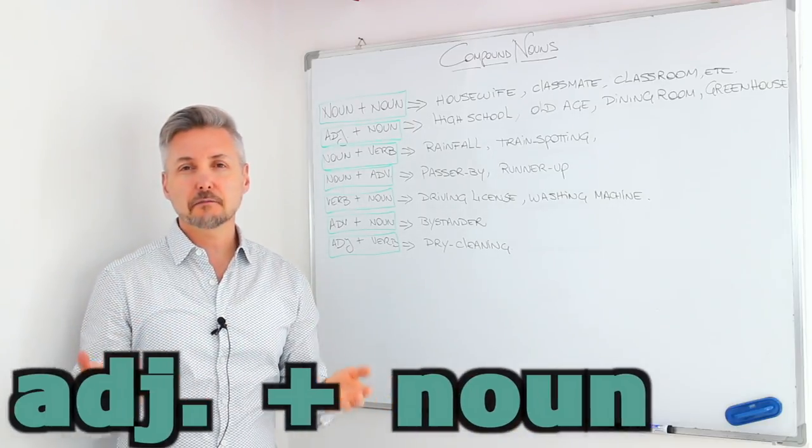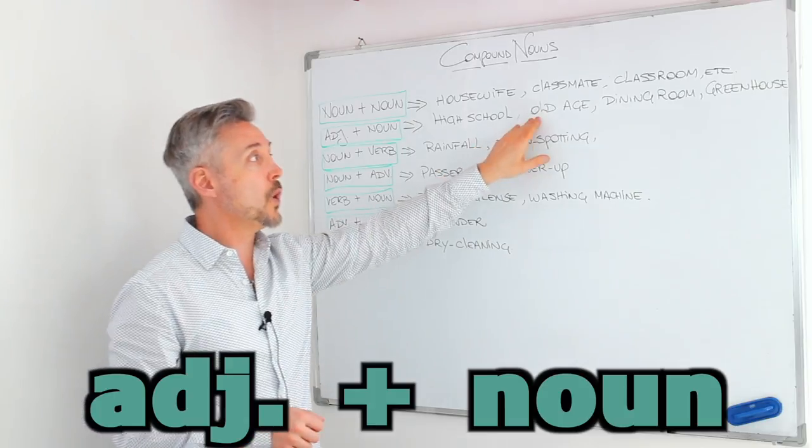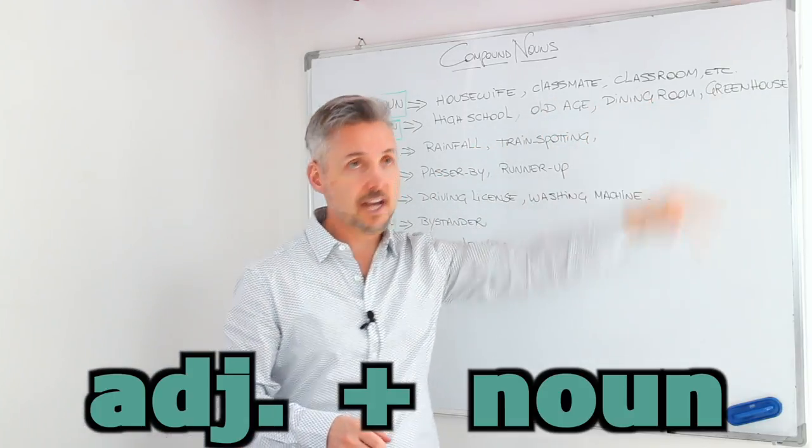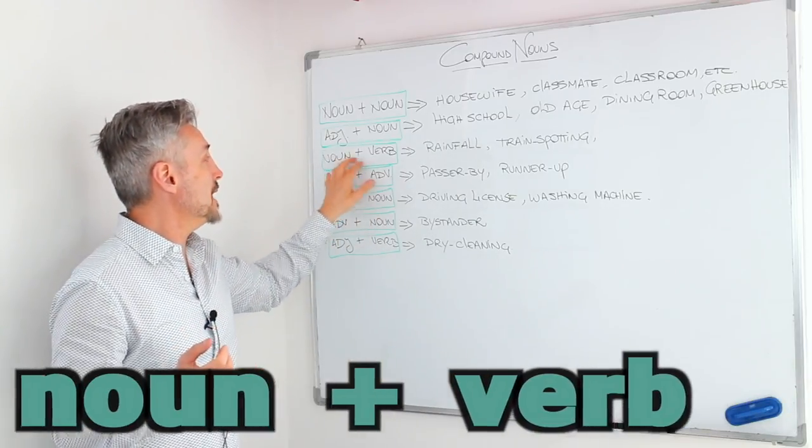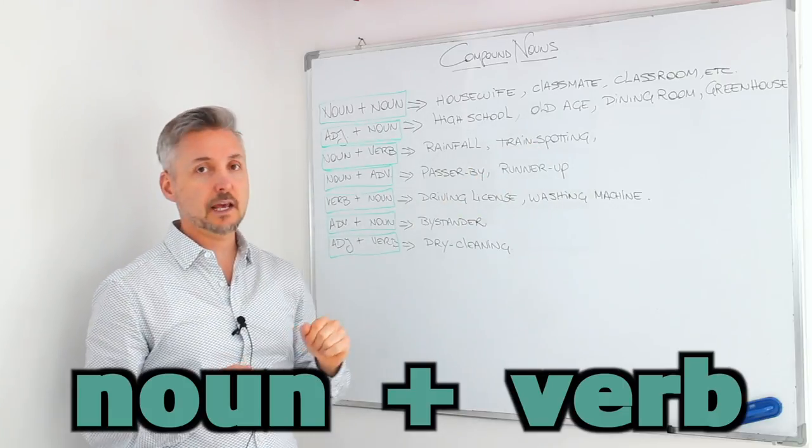Then we have adjective plus noun. For example, high school, old age, dining room, greenhouse. Or noun plus verb. Rain, fall, train, spotting.